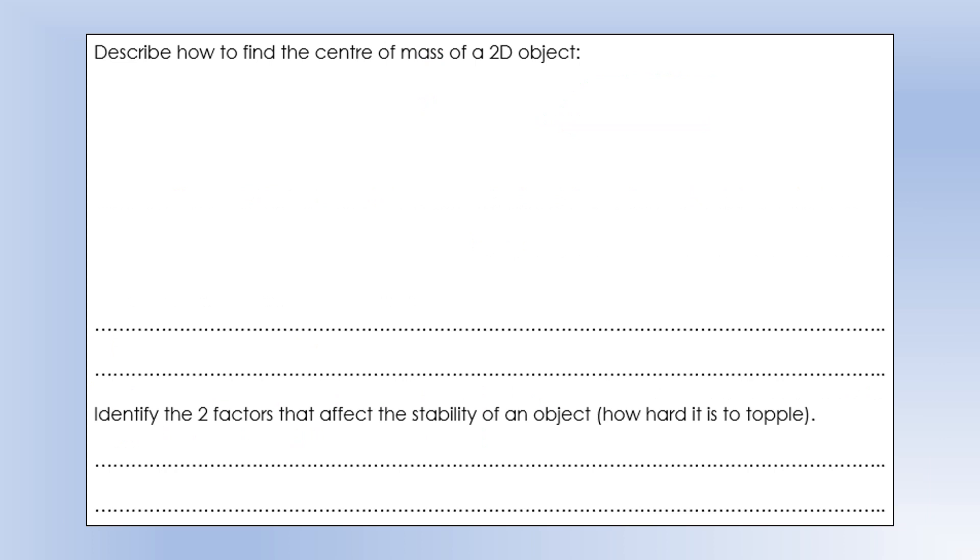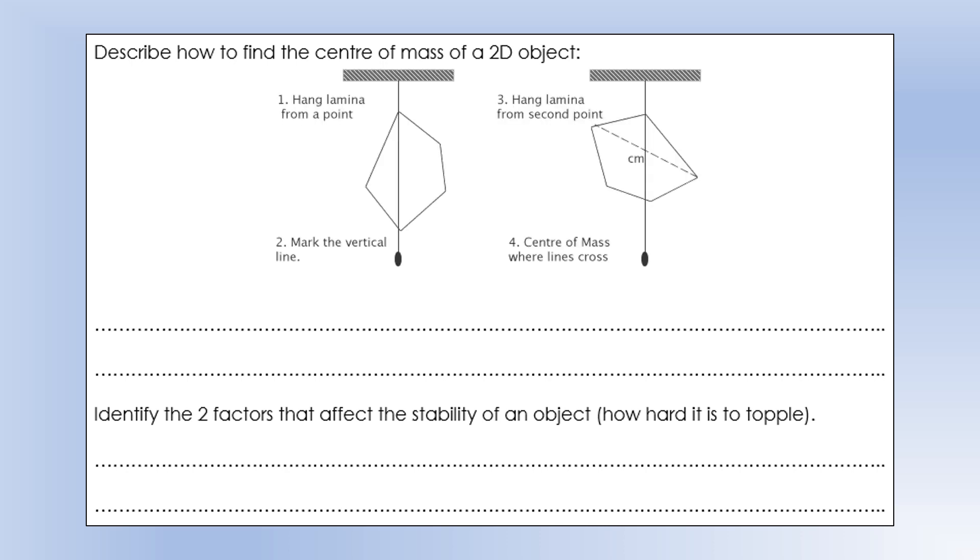Describe how to find the centre of mass of a 2D object. 2D objects are sometimes referred to as laminas. Essentially, all you have to do is hang it from two different places, and then draw vertical lines downwards from those places, and where those lines intersect will give you the centre of mass. The thing you can see hanging down with the object on the end of it is what we call a plumb line. That's what allows us to draw vertical lines down from the pivot point.